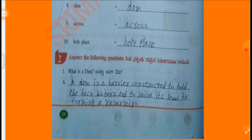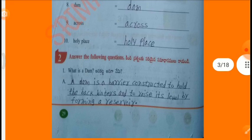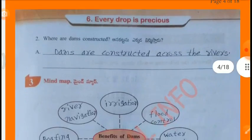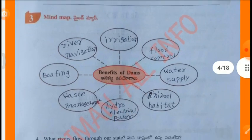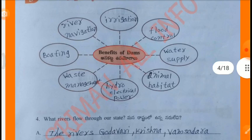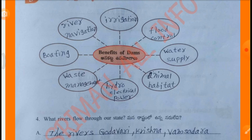Answer the following questions. What is a dam? A dam is a barrier constructed to hold back waters and to raise its level by forming a reservoir. Where are dams constructed? Dams are constructed across the rivers. Benefits of dams: Mine Map, Boating, River Navigation, Irrigation, Flood Control, Water Supply, Animal Habitat, Hydro-Electrical Power, Waste Management.